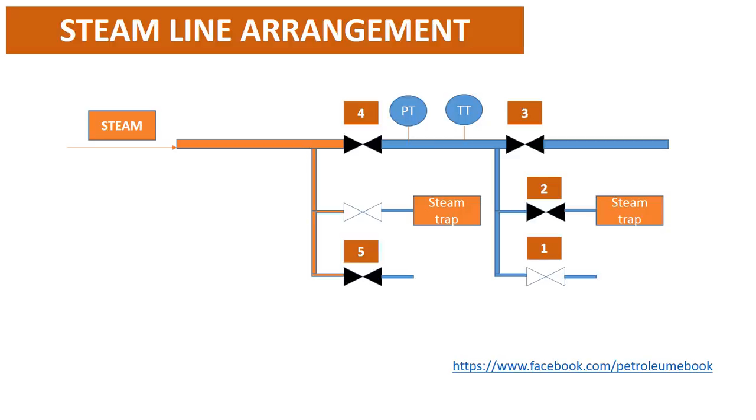Step 4: Slowly open valve 4 until half flow rate. At this time, pressure and temperature of downstream valve 4 start increasing.